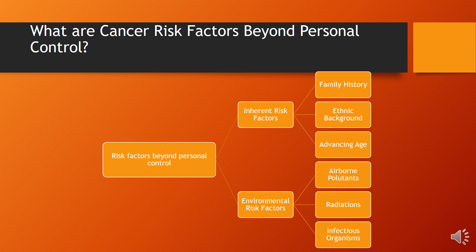There are various risk factors for cancer beyond personal control, classified into two broad categories: inherent risk factors and environmental risk factors. Inherent risk factors include family history, ethnic background, and advancing age. Family history is a factor in many types of cancer — there may be some inheritance of a mutated form of a specific gene that increases the possibility of developing cancer, for example in breast cancer.